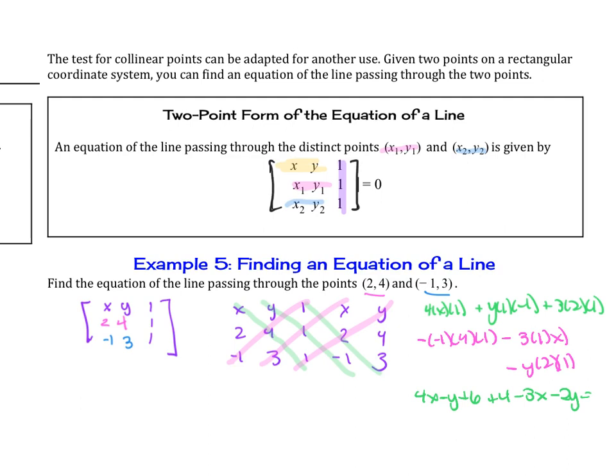And then, combining like terms, x's, so we get an x, and then we get a minus 3y, and then 6 plus 4 is plus 10 equals 0. So we don't have to change anything here. This is the equation of the line.